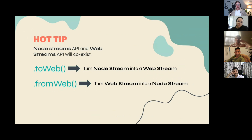A quick note: the old Node.js Streams API isn't being removed and still powers many libraries. The two APIs are not directly compatible, so `toWeb` and `fromWeb` methods have been added to all stream classes in both the old and new APIs to ensure compatibility — and we'll see this in action a little later.